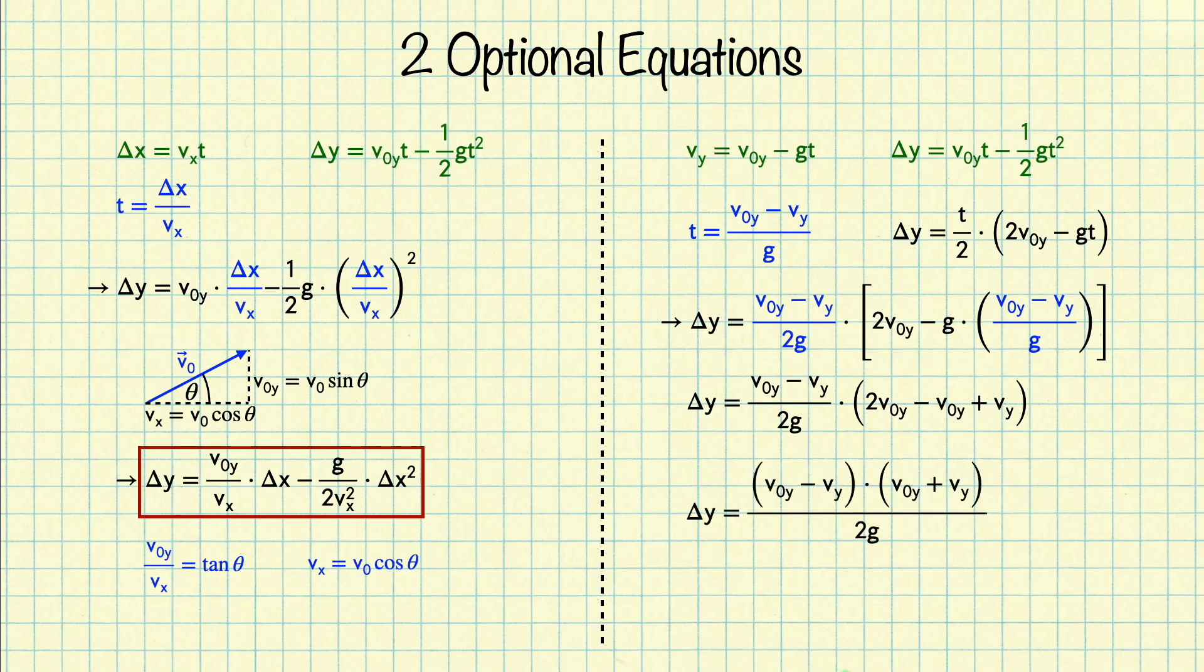And you may recognize that this piece times this piece is a difference of squares. We have v_0y minus v_y times v_0y plus v_y. Foiling that out will give us v_0y squared minus v_y squared, and I'm going to bring this factor of 2g over to this side of the equation to get that 2g times delta y equals v_0y squared minus v_y squared. And finally, I'm going to isolate the v_y squared term to get that v_y squared equals v_0y squared minus 2g delta y.